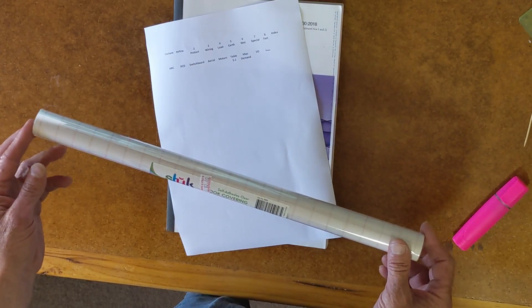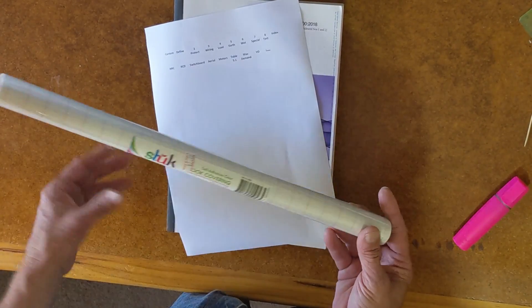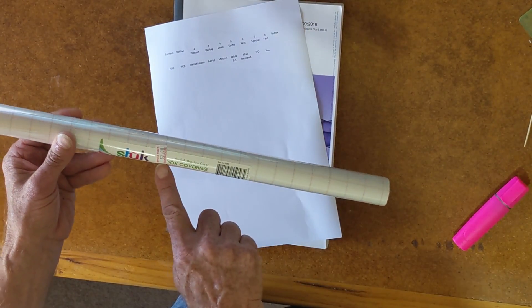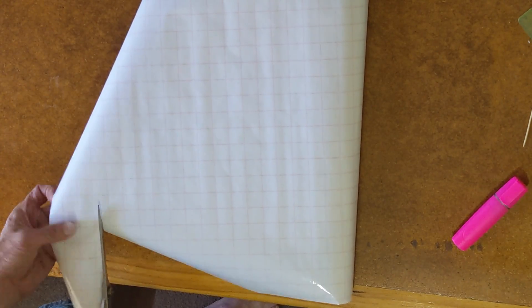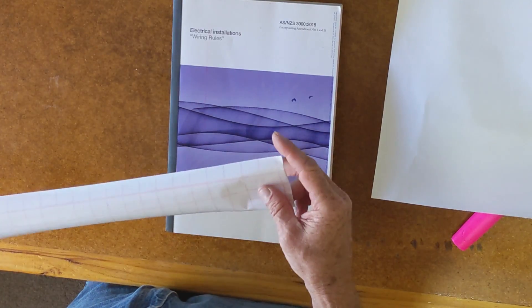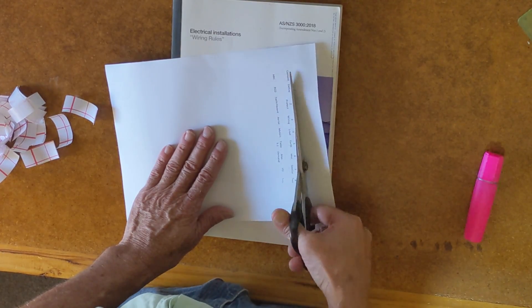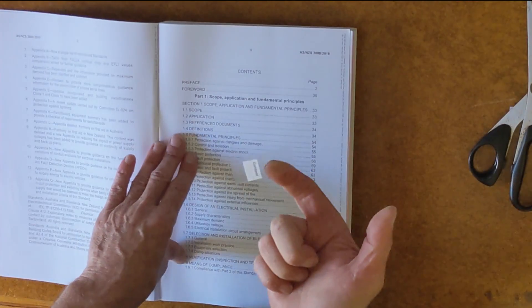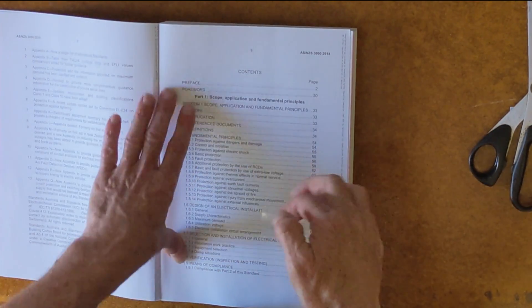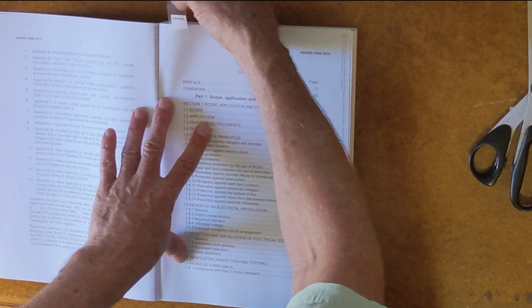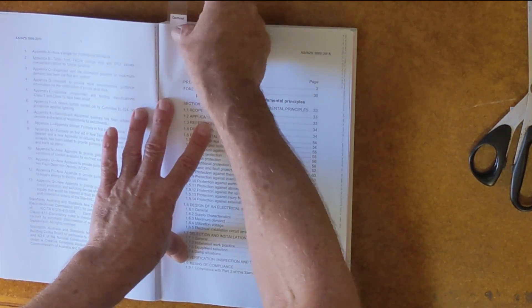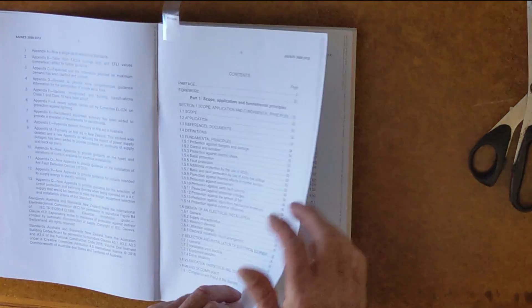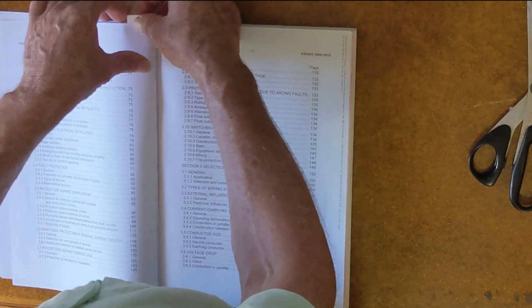I went down to the local $2 shop and bought myself some contact. $2. This is all I need. Now when I put my labels on, I like to put them straight on here.